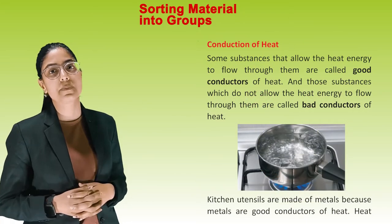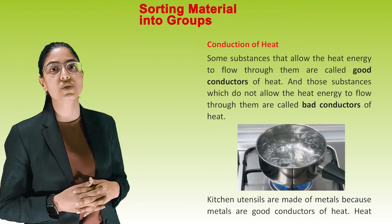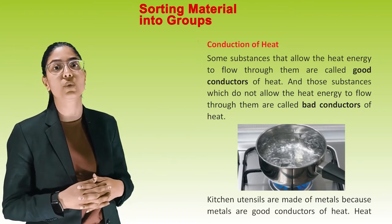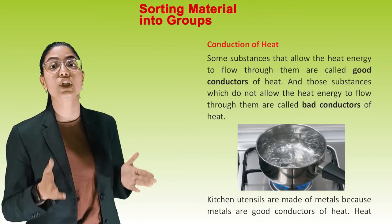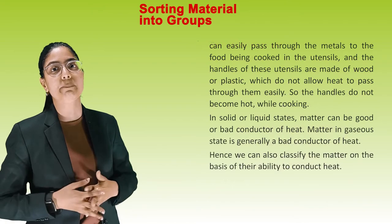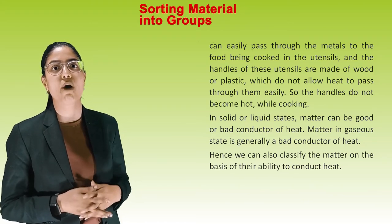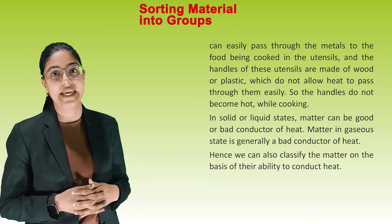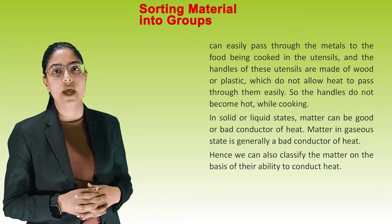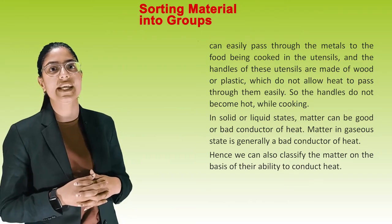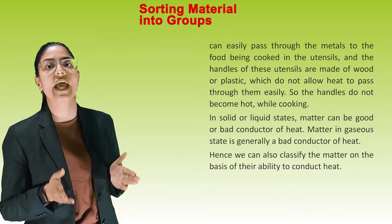Some substances that allow heat energy to flow through them are called good conductors of heat, while those that do not are called bad conductors of heat. Kitchen utensils are made of metals because metals are good conductors of heat, allowing heat to pass easily to the food being cooked. The handles of these utensils are made of wood or plastic, which do not allow heat to pass through easily, so the handles do not become hot while cooking. In solid or liquid states, matter can be a good or bad conductor of heat; matter in gaseous state is generally a bad conductor. We can therefore classify matter on the basis of the ability to conduct heat.